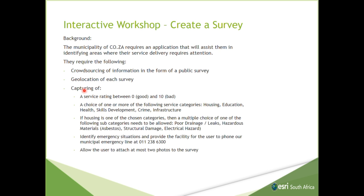I've just come up with a few requirements for a fake municipality that I called COSA. The municipality requires an application that will assist them in identifying areas where service delivery requires attention. The highlights are that they want to crowdsource information in the form of a public survey — we can do that with Survey123. Geolocation of each survey — that's perfect. And then the capturing of a service rating from zero to ten. Some categories — they don't want the user to type free text, so they must choose from a list.